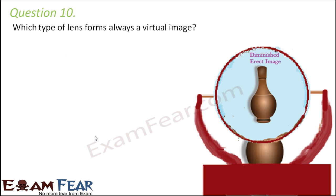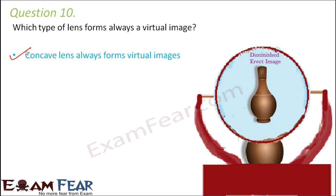Question number ten: Which type of lens always forms a virtual image? A concave lens will always form a virtual image. A convex lens forms a real image for certain object positions and a virtual image for others, but a concave lens always forms virtual, diminished, erect images.